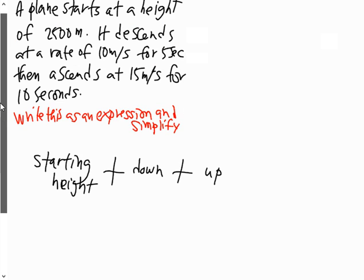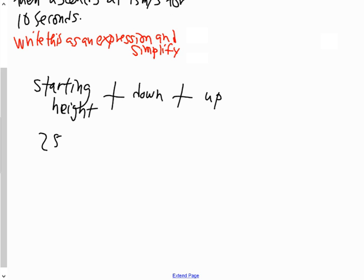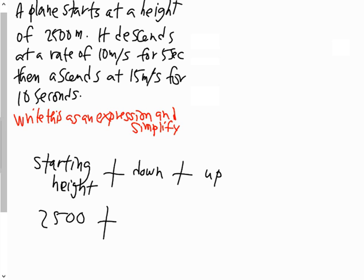Starting height was 2,500 meters. Plus how far did it go down? It descends at a rate of 10 meters per second for five seconds. Which one of those two numbers, 10 or 5, is negative?